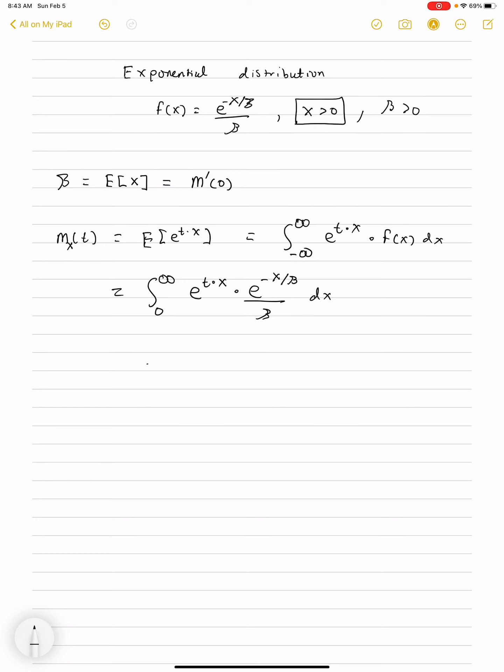Hi and welcome. Today we're going to be talking about properties of the exponential distribution. The exponential distribution is written above. It only applies for x greater than 0 and beta greater than 0.